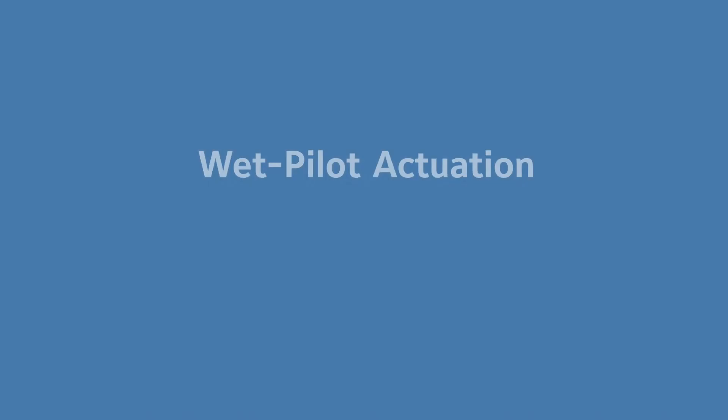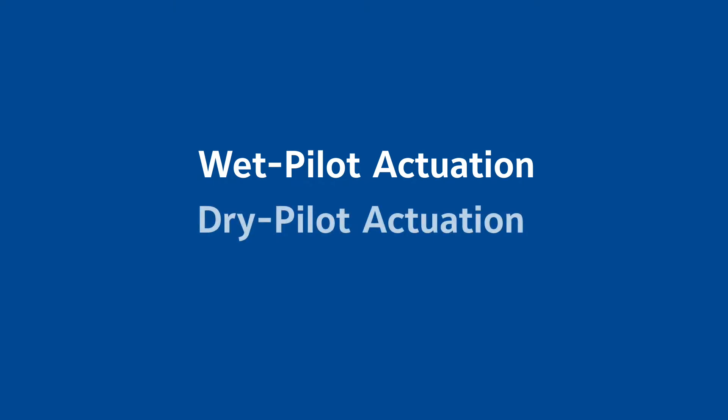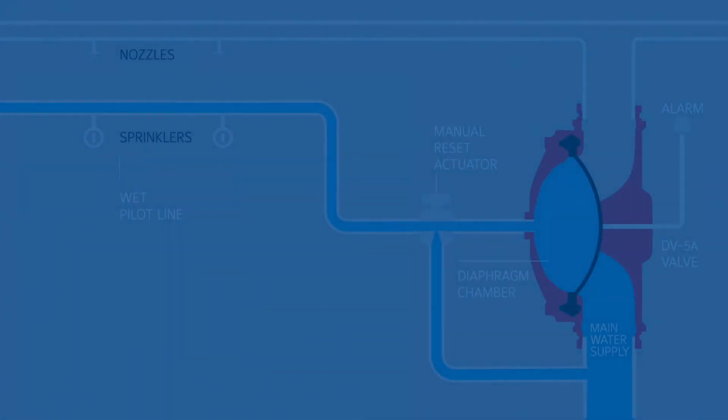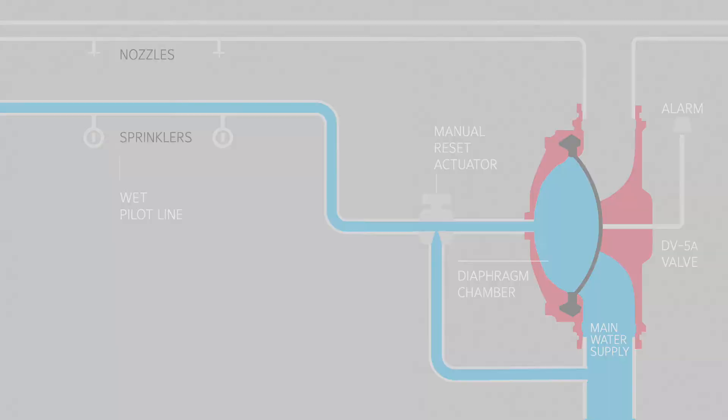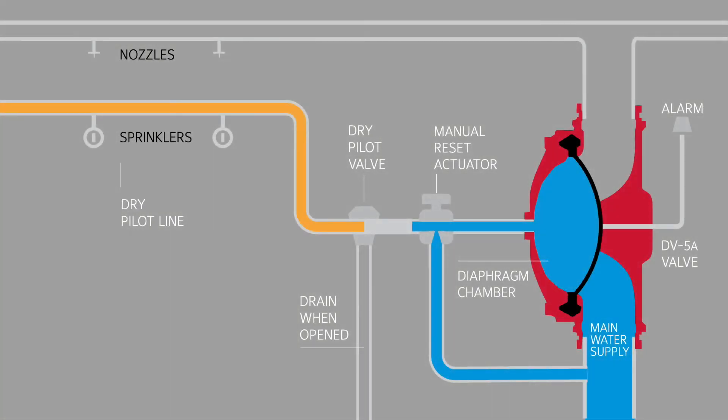TYCO also offers wet pilot actuation and dry pilot actuation options. The wet pilot detection system includes water charged pilot lines and sprinklers in addition to open deluge nozzles. The dry pilot detection system includes dry pilot lines and a dry pilot valve.